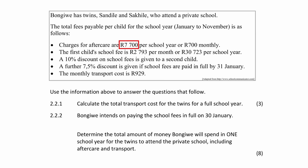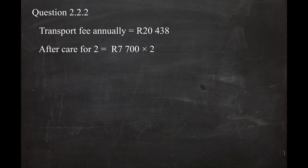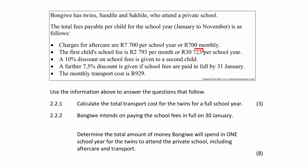The total aftercare charges for the twins is 7,700 Rand per year multiplied by 2 children, which equals 15,400 Rand. The school fees for the first child is 30,723 Rand for the year. The fees for the second child is 90% of the school fees for the first child, because the second child gets a 10% discount.